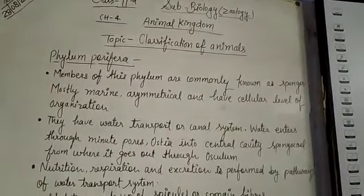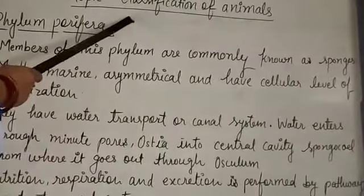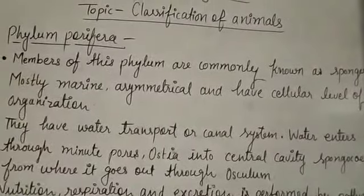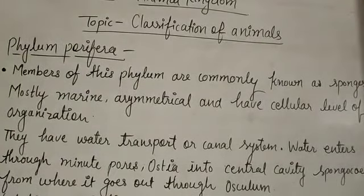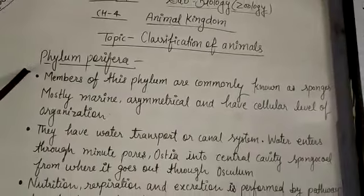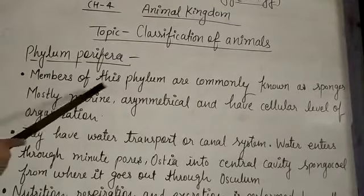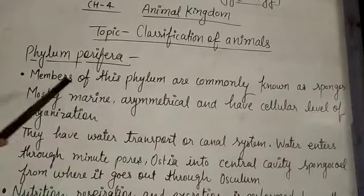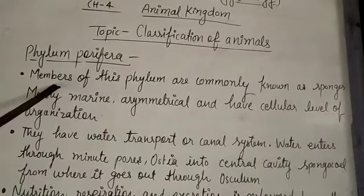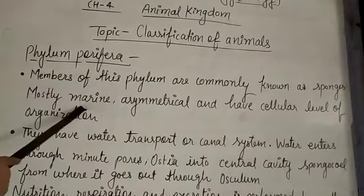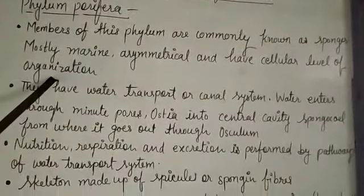Today we will also study about the classification of animals. In classification of animals, we will study about phylum Porifera, meaning sponges. Members of this phylum are commonly known as sponges. They are mostly marine, asymmetrical, and have a cellular level of organization.